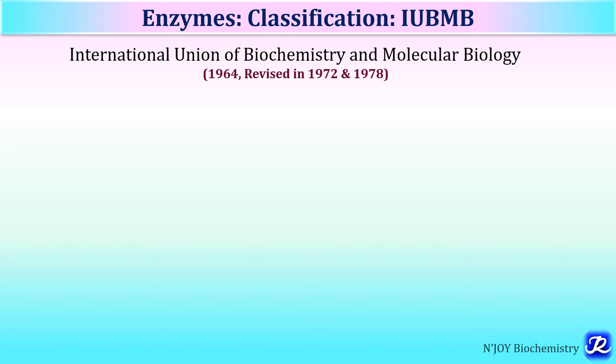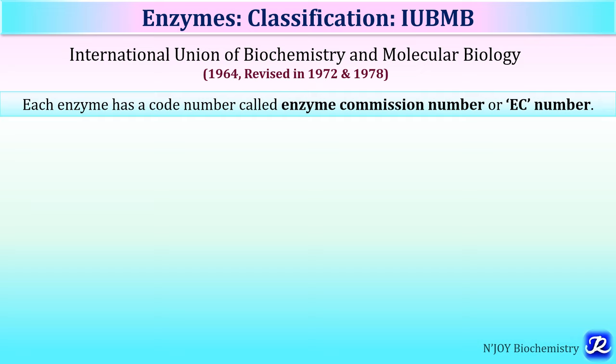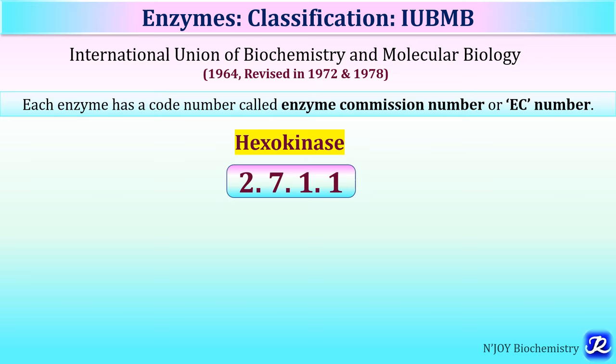Enzymes are classified by the International Union of Biochemistry and Molecular Biology, abbreviated as IUBMB. The classification was done in 1964, later revised in 1972 and 1978. According to this classification, each enzyme has a code number called the enzyme commission number, or EC number, which has 4 digits.